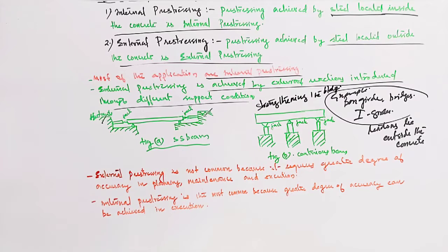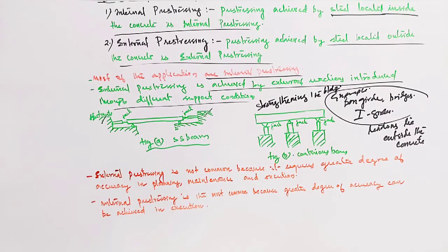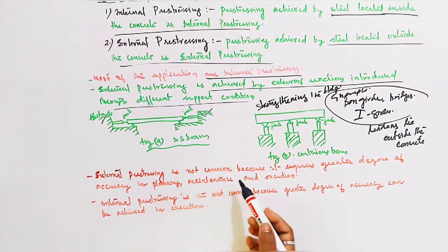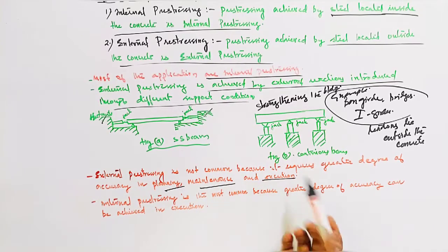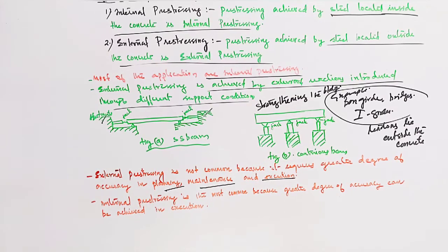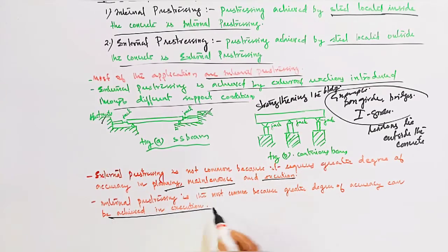External pre-stressing is used in bridges - box girder, I-girder - and for strengthening buildings. External pre-stressing is not common; it requires a greater degree of accuracy in planning, maintenance, and execution. Internal pre-stressing is most common because a greater degree of accuracy can be achieved in execution.